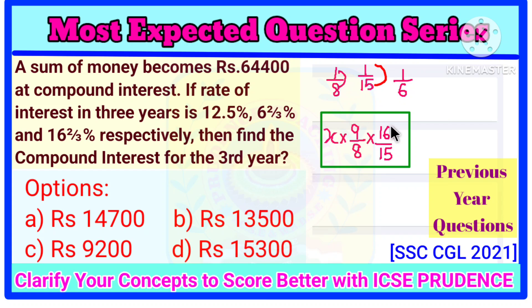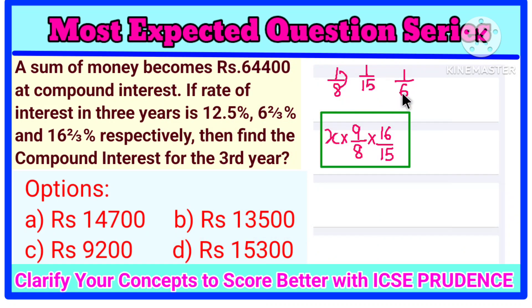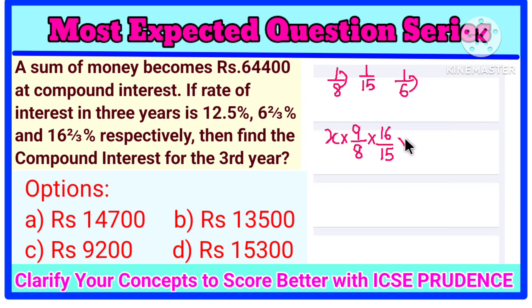On this principal, you are going to get an interest of 16⅔%, that is 1/6. That means if 6 is the principal, you will get 1 as interest. So the amount will become 7/6. And this amount is given to be 64,400.